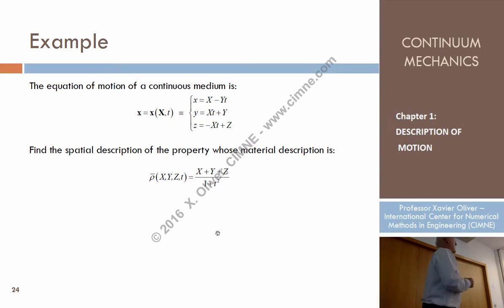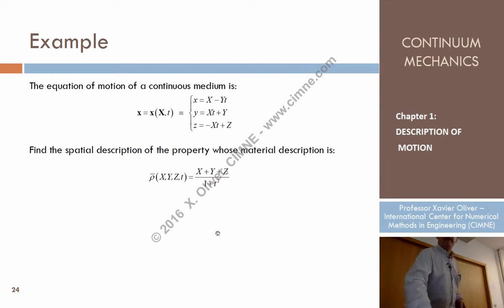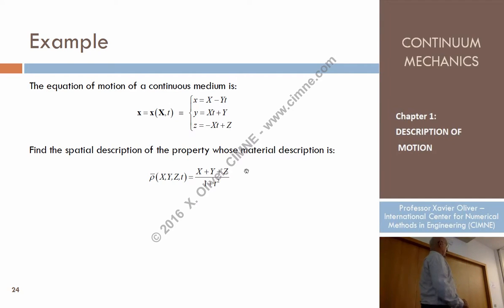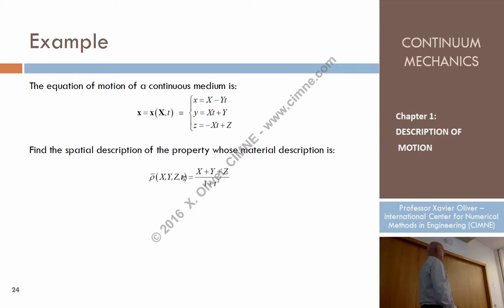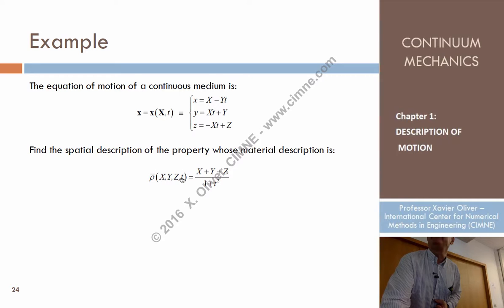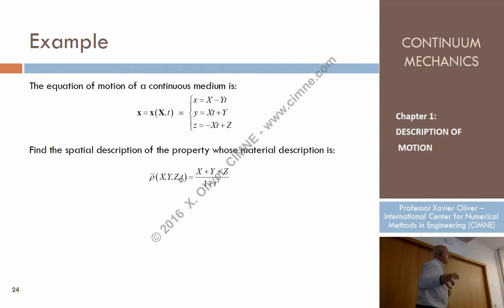Imagine that I'm interested in the density. I describe the density of a certain particle in terms of the particle label and time. So a certain function of the particle label, the material coordinates, and time. This is the material description of density. Why is it material? Because if I just set a certain value for these three arguments, I'm going to define a particle.